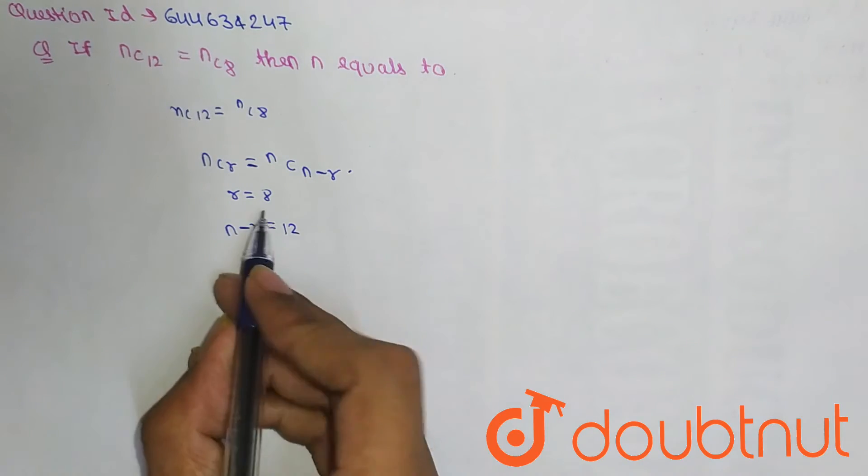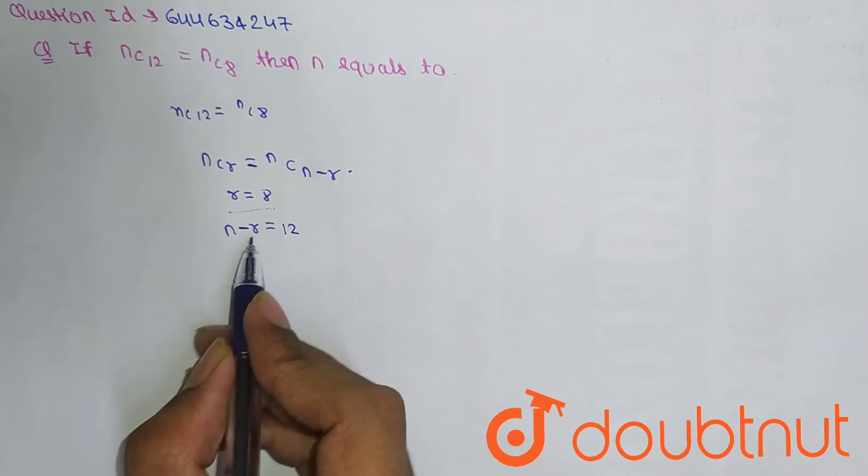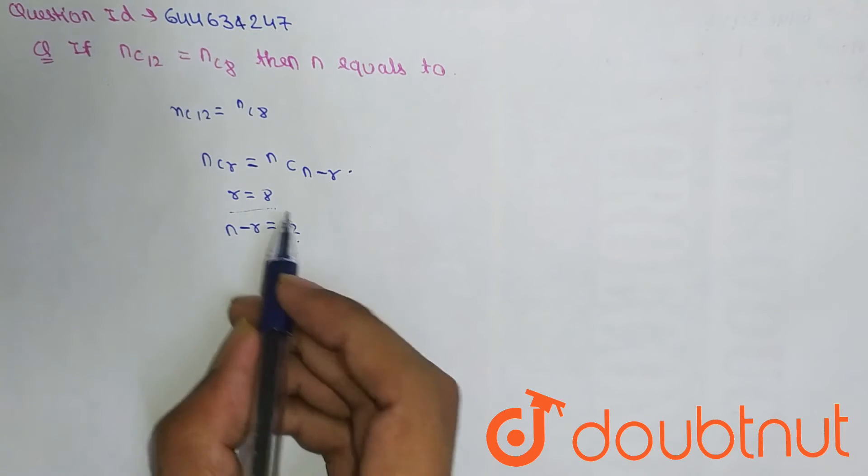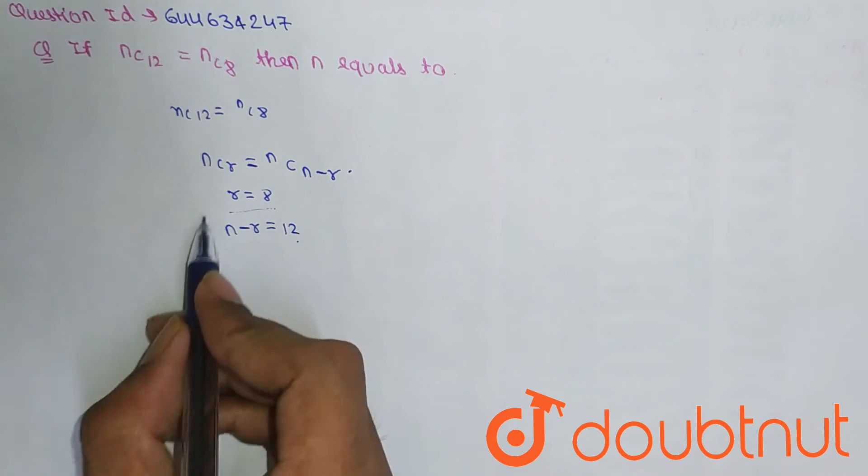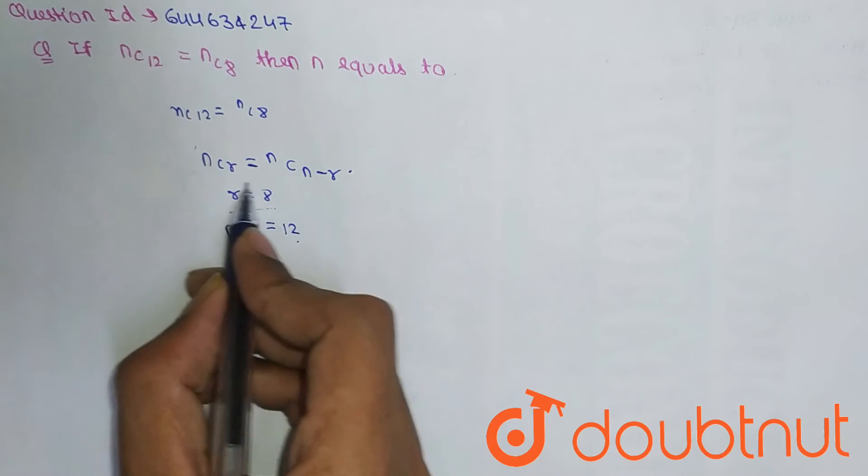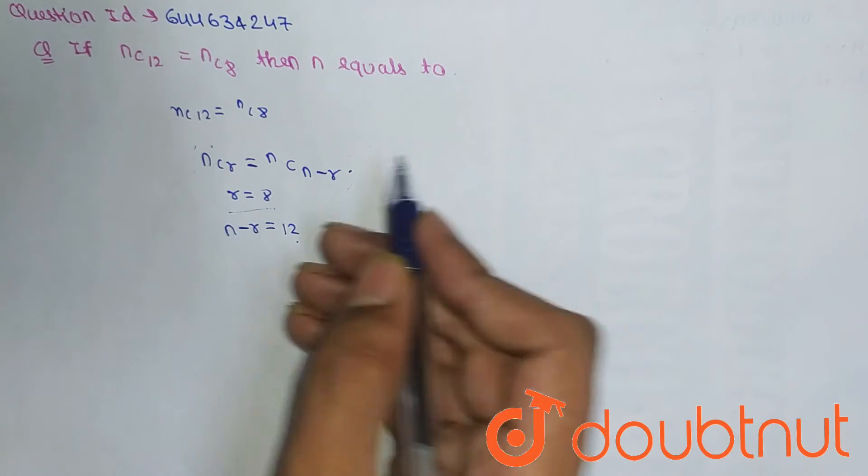We have r equals 8 and n-r equals 12. To find the value of n, we put these values in the equation.